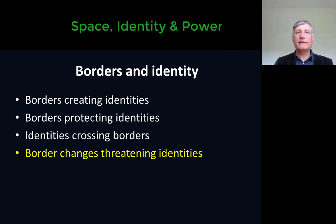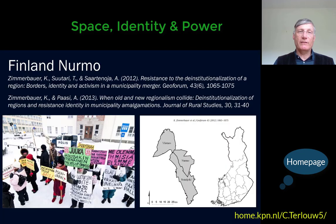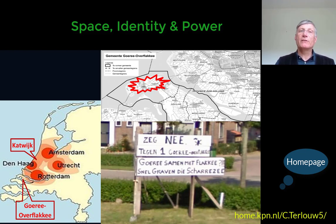A fourth manner in which borders and identities are related is when borders change. These border changes can be seen as threatening identities, and identities can then thicken into resistance identities, as discussed in a previous lecture. For instance, in Finland, in relation to the amalgamation of three municipalities, a resistance identity was formed in Noormarkku. We also discussed a case from Goeree-Overflakkee, where in the old municipality of Goedereede a large majority of the population objected to being amalgamated with other municipalities on the island, and that created a resistance identity.